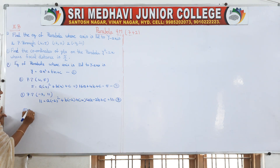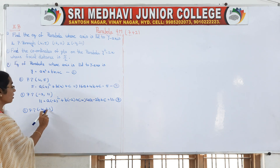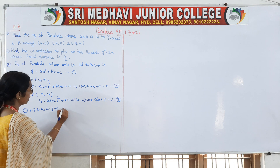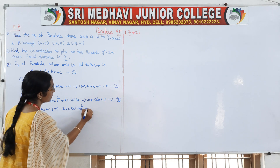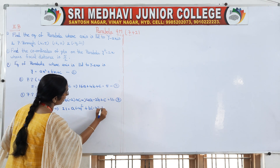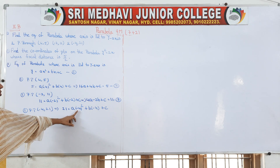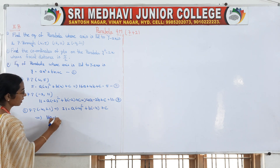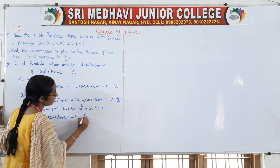The parabola also passes through the point (-4, 21). Substituting the y-coordinate 21 and x-coordinate -4: 21 = a(-4)² + b(-4) + c. Since (-4)² = 16, we get 16a - 4b + c = 21. Consider this as your fourth equation.